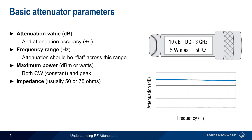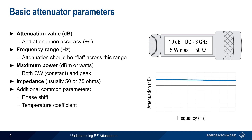In addition to these basic parameters, other parameters such as the amount of phase shift introduced by the attenuator, the effect of temperature on the provided attenuation, and the linearity of the attenuator — that is, the levels of harmonics and intermodulation products — may also be important, especially for attenuators that are not constructed using purely resistive components.